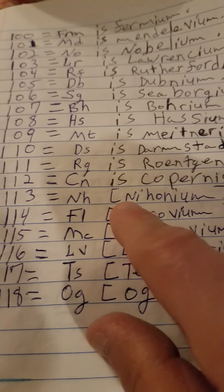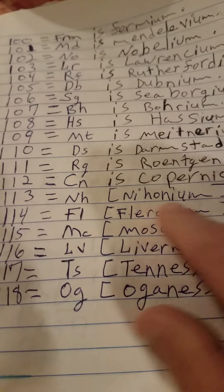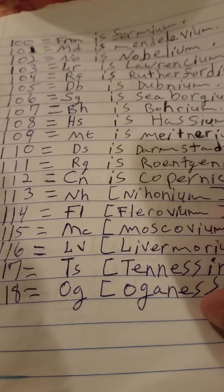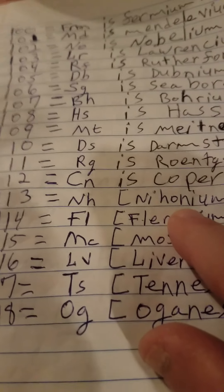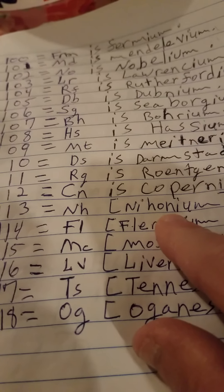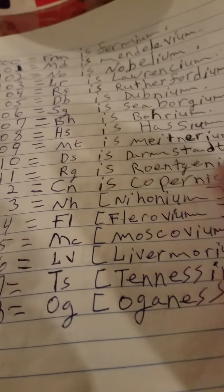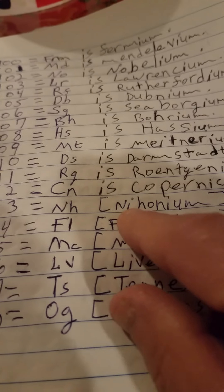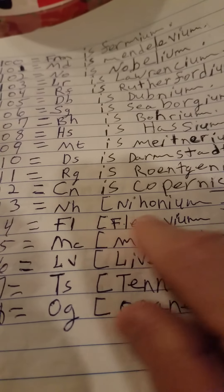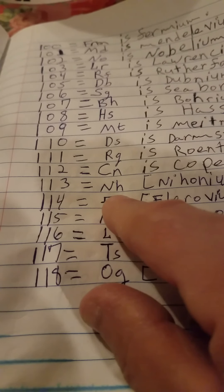For 113, the symbol is NH for Nihonium. Nihon is a Japanese word meaning rising sun. If you see the Japanese flag, you see a very red circle - that's the flag, rising sun. The Japanese word Nihon, so Nihonium.